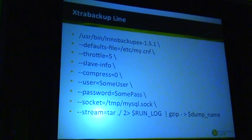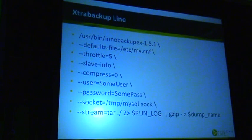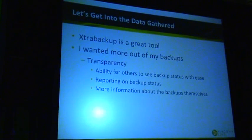The actual XtraBackup line I use is very simple. It has --slave-info, compression set to zero because I handle compression myself, user, password, socket, streaming tar — pipe the output to a run log and gzip it, then pipe that to a dump file. All the magic happens before and after this line. The code isn't public yet, not open-sourced yet, though I'm thinking about open-sourcing it.